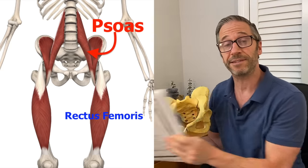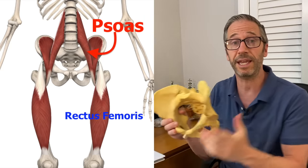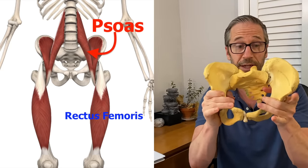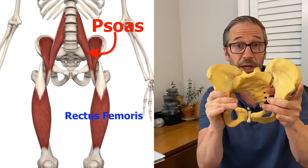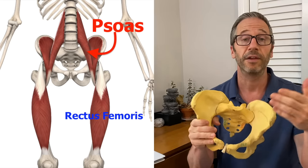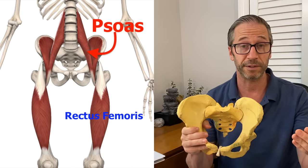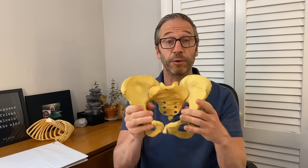The left AIC pattern, as discussed in myokinematic restoration as a postural restoration course — the muscles you have to inhibit to get the pelvis out of the left AIC pattern, to get someone's pelvis neutral again, you have to inhibit the left psoas and the left rectus femoris, which are acting in concert with other muscles to hold the left side of the ilium forward, orienting the sacrum and lumbar spine to the right. PRI calls it the left AIC, right BC, right TMCC pattern. I'm just focusing on the position of the pelvis right now.